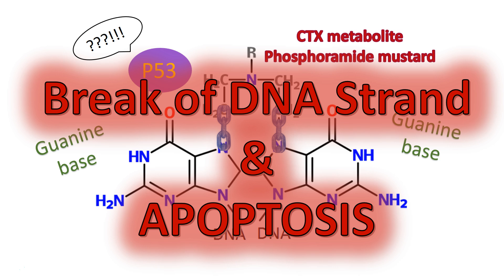This leads to subsequent apoptosis of the cell. This is obviously non-specific, so it's going to do that with our tumor cells and with our healthy host cells as well. This is also not cycle-specific — we don't have to have a cell in any specific part of the cell cycle for this to work. It is a very broad anti-neoplastic and can be given alone; it's just going to start killing off cells.